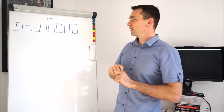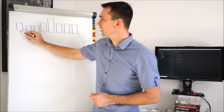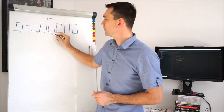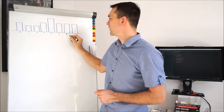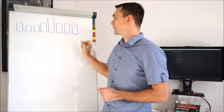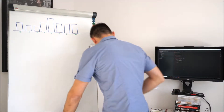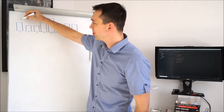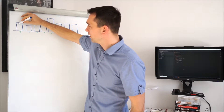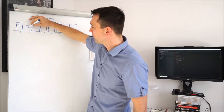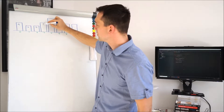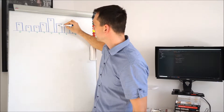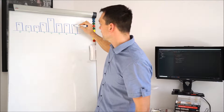Let's index them from 0: 1, 2, 3, 4, 5, 6, 7. And let's assign them some heights — for example, this will be 4, this will be 3, this will also be 3, this will be 4, this will be 7, this will be 4, 4, and 4.